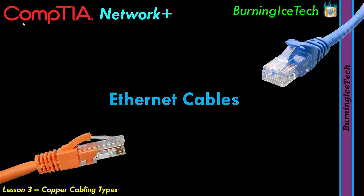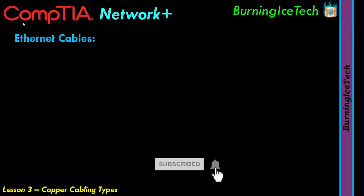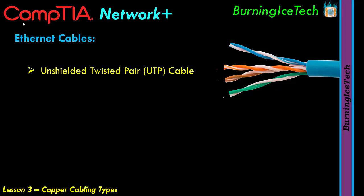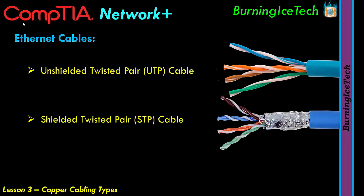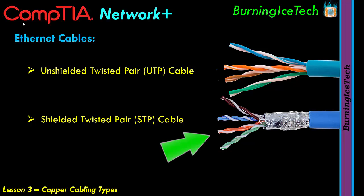The first topic we're going to be talking about with regards to copper cabling types is Ethernet cables. Some of you might know these as network cables or good old-fashioned LAN cables. There are two kinds: the first is unshielded twisted pair, also known as UTP, and the other is shielded twisted pair, also known as STP. The first has just eight wires in pairs twisted around one another, while the second has a tinfoil or braided wire shield around it — sometimes both.